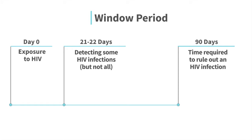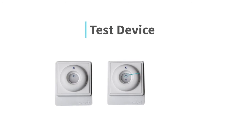However, it can take as long as 3 months to produce a positive result. A negative result may not be accurate until 3 months after your last exposure. The test device will determine your result.